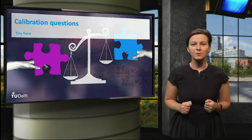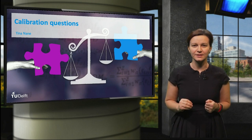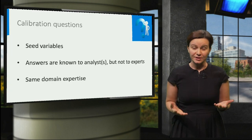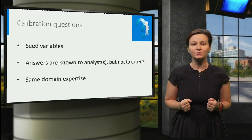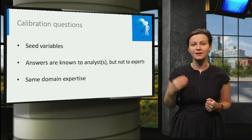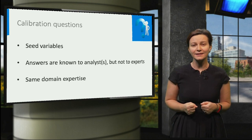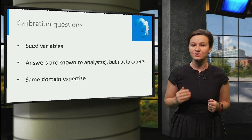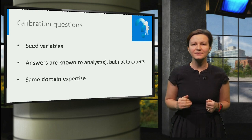The method proposes calibration questions to be used for the evaluation and aggregation of expert assessments. The calibration questions, or seed variables, are questions whose answers are known to the analyst at the time or shortly after the elicitation, but should not be known by the experts.